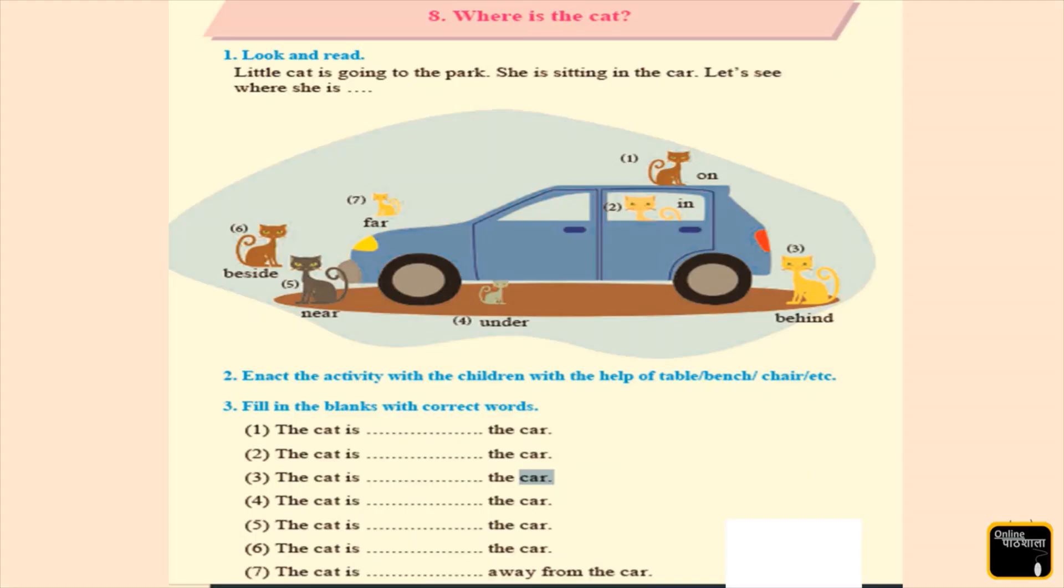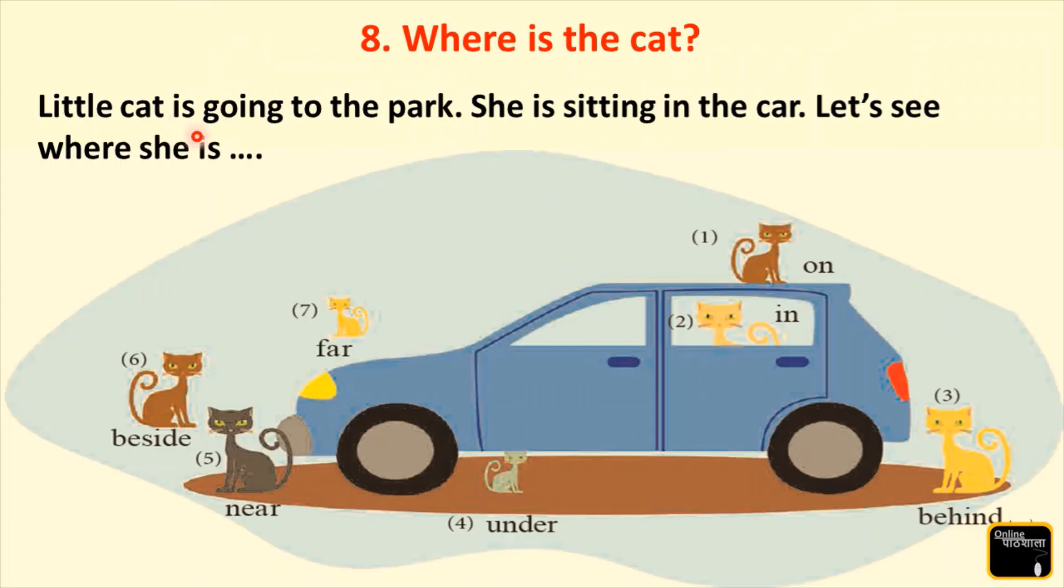Now kids, this is your lesson, 'Where is the cat?' from your English textbook. Little cat is going to the park. She is sitting in the car. Let's see where she is now kids.